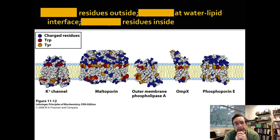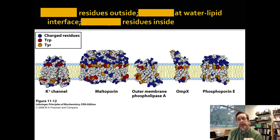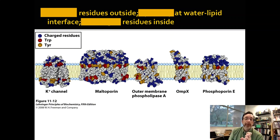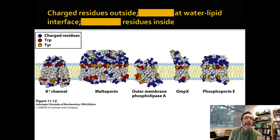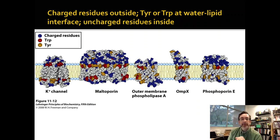All these integral membrane proteins have hydrophobic residues crossing the membrane, and they also have patterns at the head group level. If you color charged residues blue, tryptophan residues red, and tyrosine residues orange, you can see that tryptophans and tyrosines are around the head groups — maybe just below the interface. Charged residues end up outside the membrane, and inside the membrane you have mostly uncharged residues shown as gray. So a colored plot lets you see that charged residues are outside, tyrosine and tryptophan are near the water-lipid interface, and the membrane interior has uncharged residues.